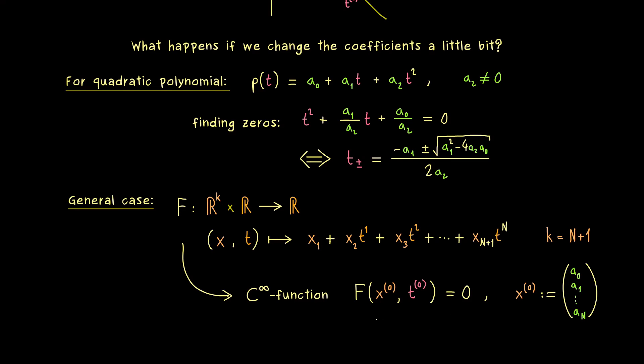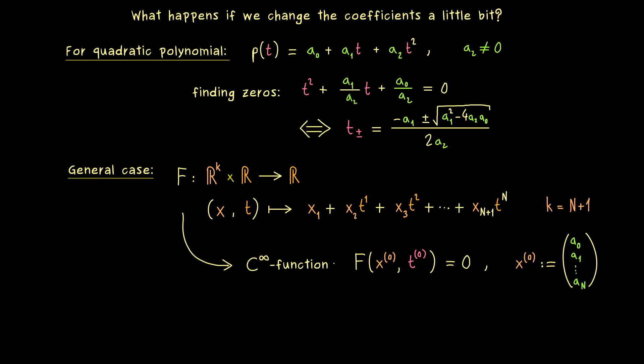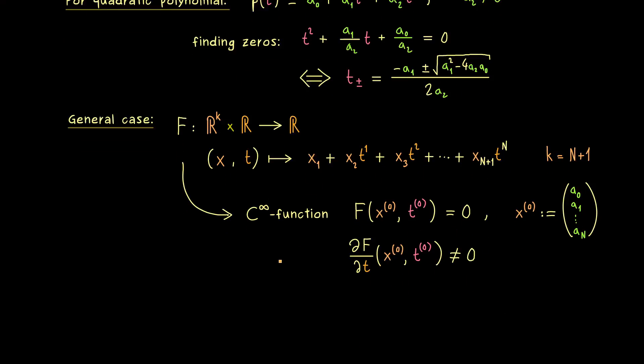Hence simple zero now means something for the partial derivative of F. It's just the partial derivative of capital F with respect to the t variable. And this is just the derivative of the polynomial. And we know this should not be equal to zero if we put in our simple zero t₀. So in other words this 1 times 1 matrix here is invertible. Hence all the assumptions from the implicit function theorem are satisfied.